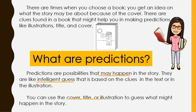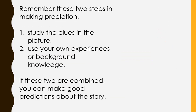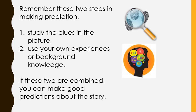You can use the cover, title, or illustration to guess what might happen in the story. When you make predictions, it is important to explain or describe why you think your predictions might be true. How to make a prediction: you need to remember these two steps. First, study the clues in the picture. Second, use your own experiences or background knowledge. If these two are combined, you can make good predictions about the story.